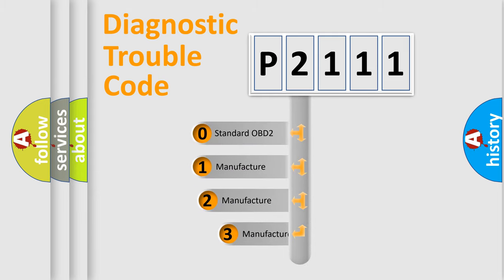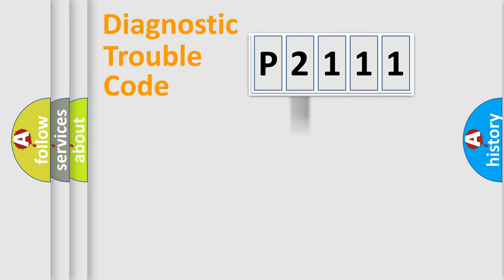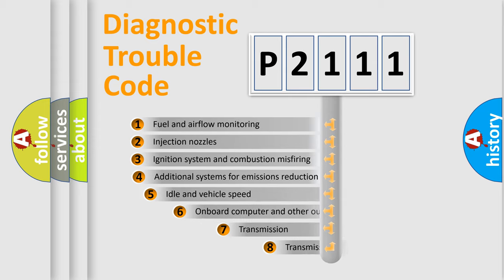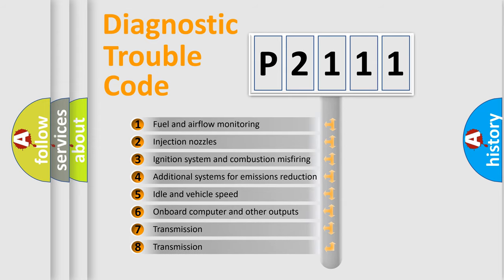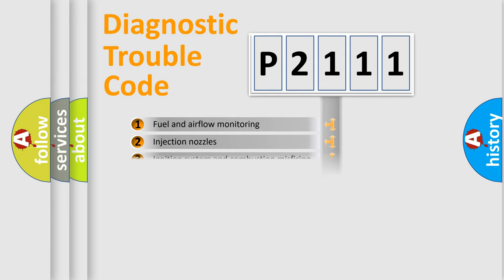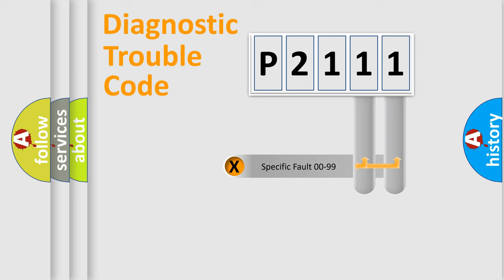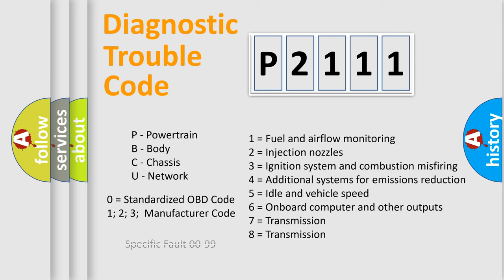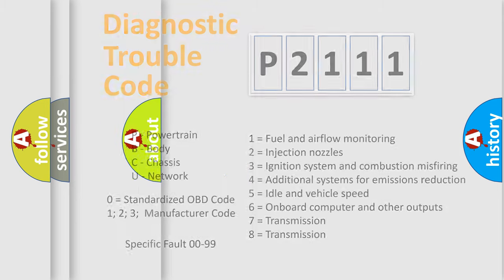If the second character is expressed as zero, it is a standardized error. In the case of numbers 1, 2, or 3, it is a more prestigious expression of the car-specific error. The third character specifies a subset of errors. The distribution shown is valid only for the standardized DTC code. Only the last two characters define the specific fault of the group. Let's not forget that such a division is valid only if the other character code is expressed by the number zero.